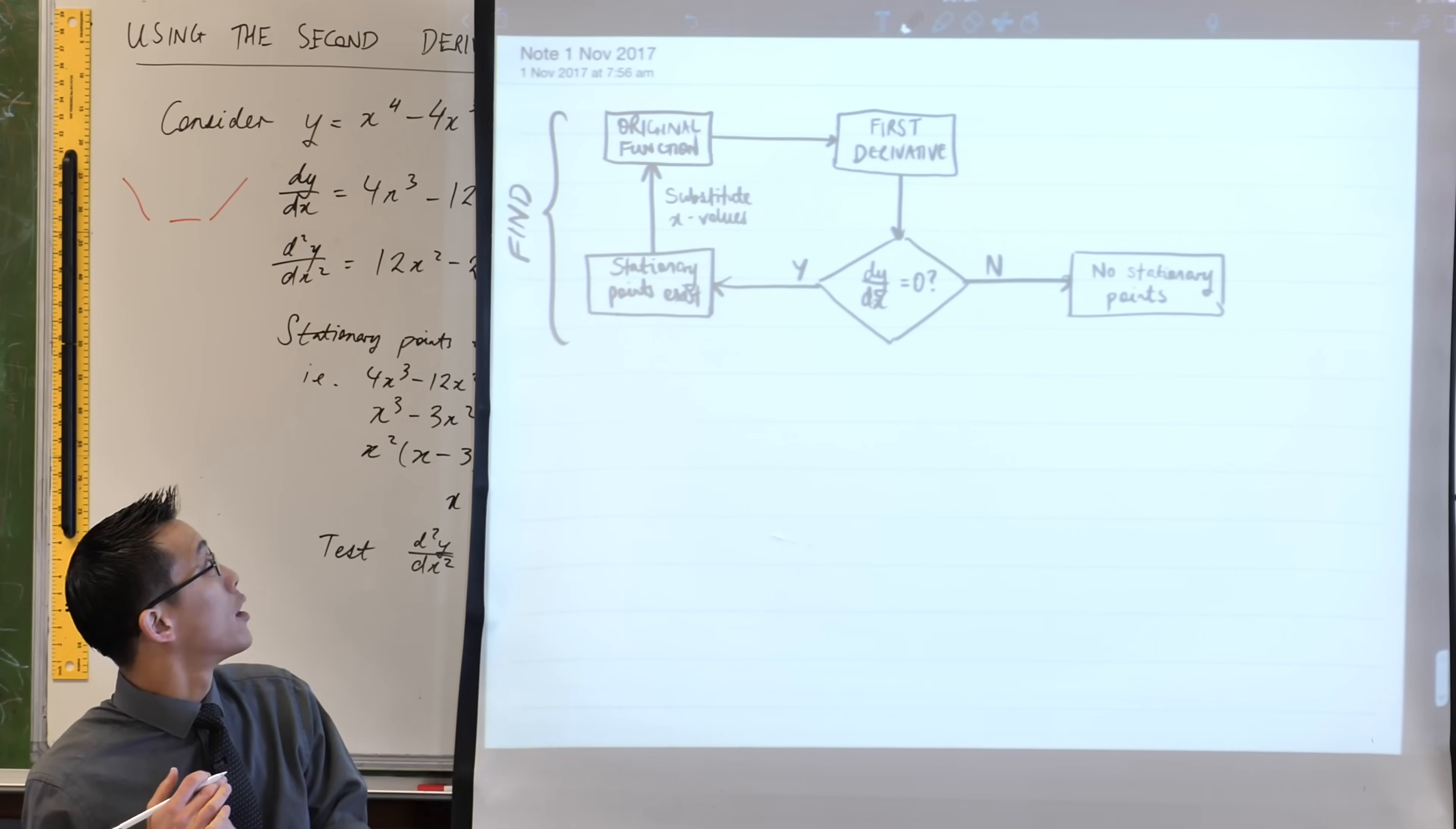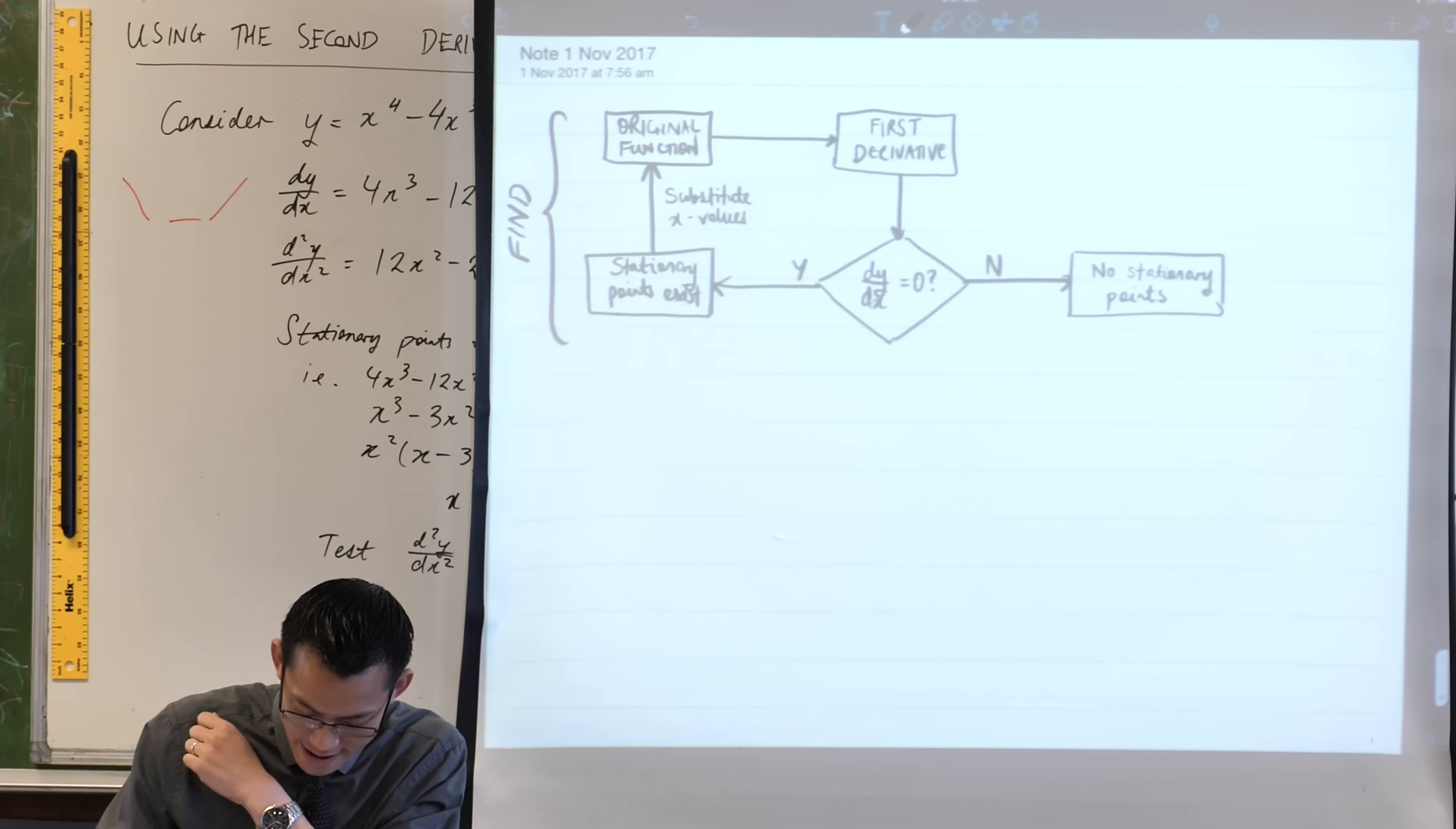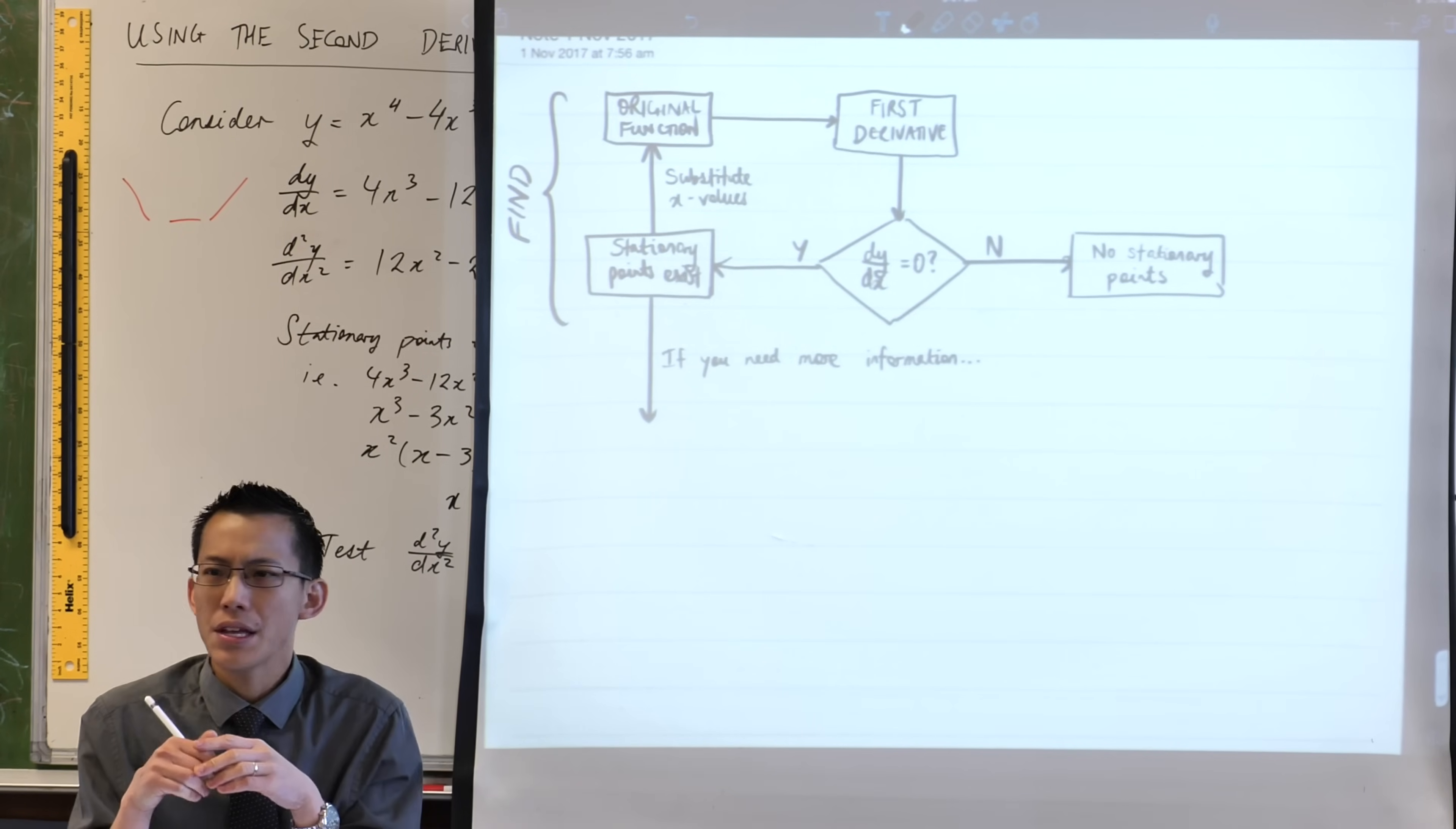So this part of the diagram, everything we've just done, is about finding stationary points. If there's a really basic question 11 type question where it's like two marks max, all we want you to do is find coordinates, you're home and hosed. However, most of the time they actually want you to do more. If you need more information, like if the question says determine the nature of these stationary points, then this is where the fun begins.